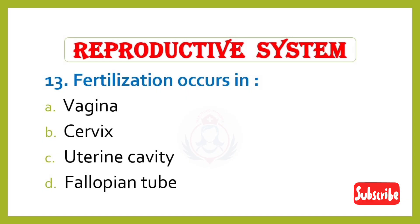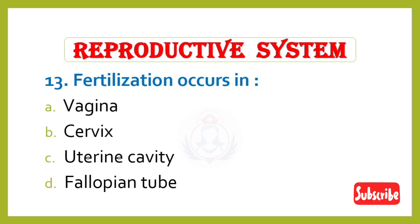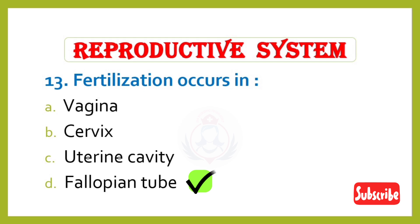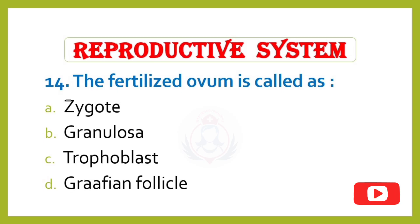Question 13. Fertilization occurs in: Option A – Vagina, Option B – Cervix, Option C – Uterine cavity, Option D – Fallopian tube. Correct answer is Option D: Fallopian tube.